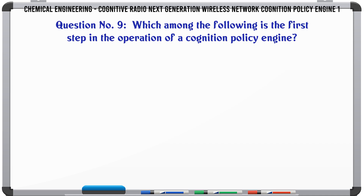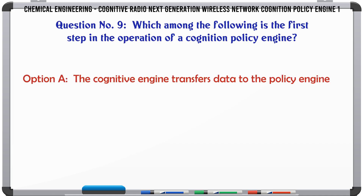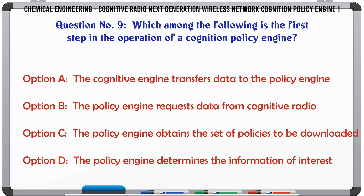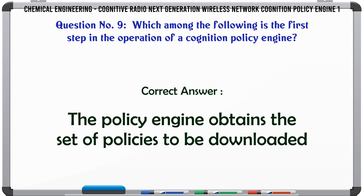Which among the following is the first step in the operation of a Cognition Policy Engine? a. The Cognitive Engine Transfers Data to the Policy Engine. b. The Policy Engine Requests Data from Cognitive Radio. c. The Policy Engine Obtains the Set of Policies to be Downloaded. d. The Policy Engine Determines the Information of Interest. The correct answer is: The Policy Engine Obtains the Set of Policies to be Downloaded.